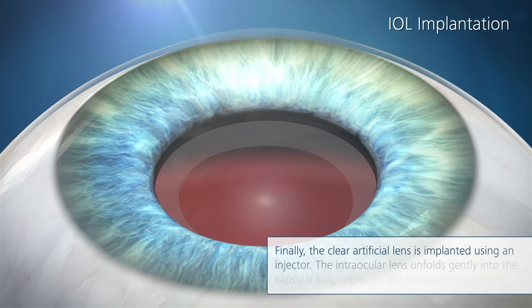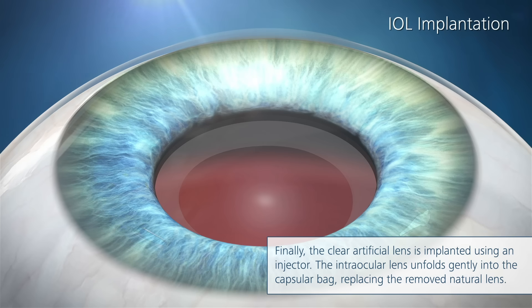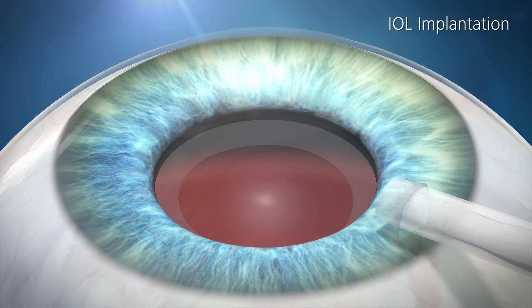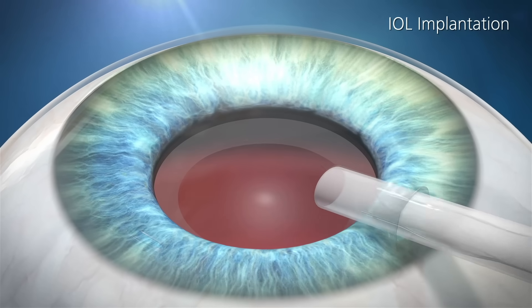Finally, the clear artificial lens is implanted using an injector. The intraocular lens unfolds gently into the capsular bag, replacing the removed natural lens.